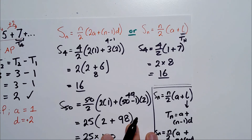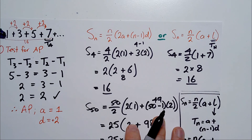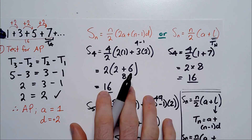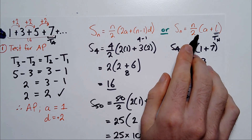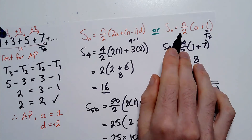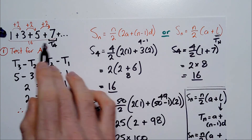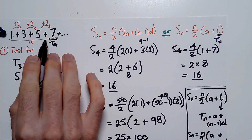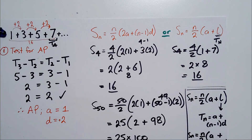Make sure you use the formula that is easiest based on the question. If you've already been given the last term, use Sn equals n over 2 bracket A plus L. If you haven't been given the last term but are just told to find the sum of the first 50 terms and only shown the first few, use Sn equals n over 2 bracket 2A plus (n minus 1)D. Hope that helps — see you in the next video. Please comment, like, and subscribe if you enjoyed.